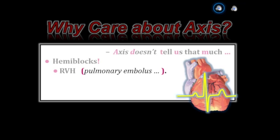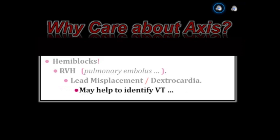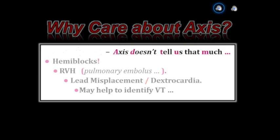Recognition of a clear axis shift to the right is supportive of pulmonary embolism diagnosis when seen in the right clinical setting. Recognition of a marked axis shift — especially when the QRS complex is all negative in lead I and all positive in aVR — strongly suggests either mix-up of the left and right arm electrodes or dextrocardia. We also use axis determination in assessment of the regular wide complex tachycardia.